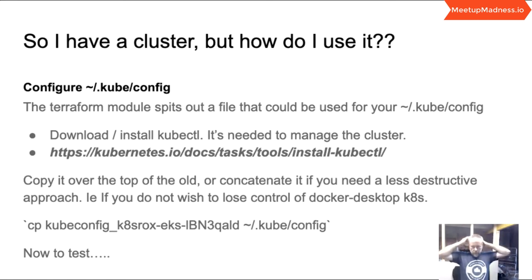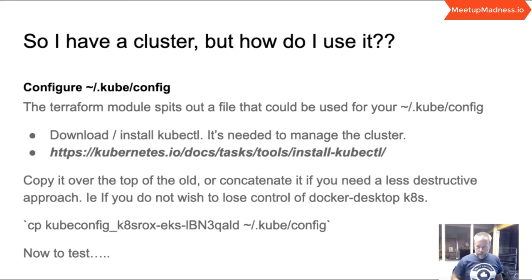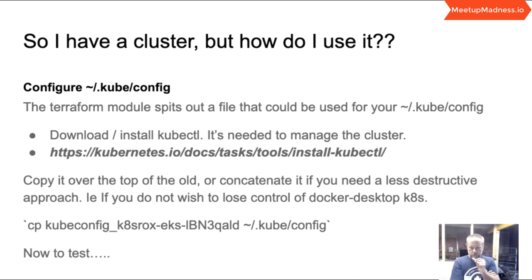So you've got a cluster in AWS — how do you actually connect to it? You need to install a little tool called kubectl. It's a Go binary so it's completely self-contained — download it, the link is on the page. What happens when you run that Terraform code is it spits out all of the authentication and certificate details that kubectl is going to need.